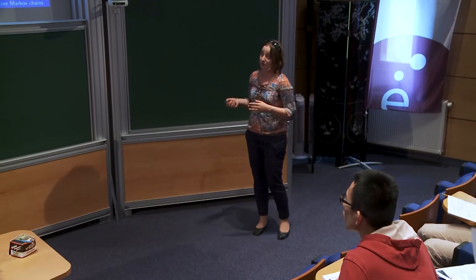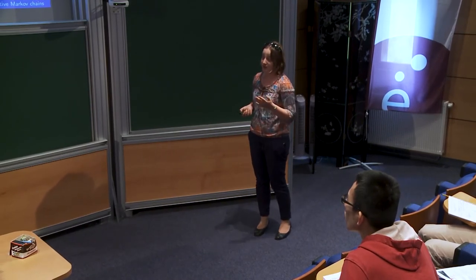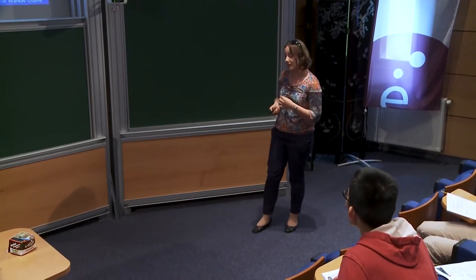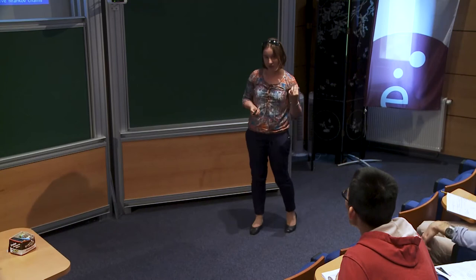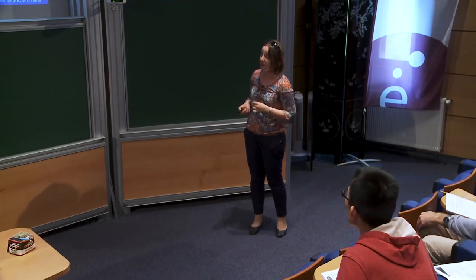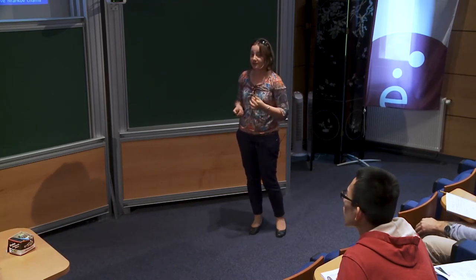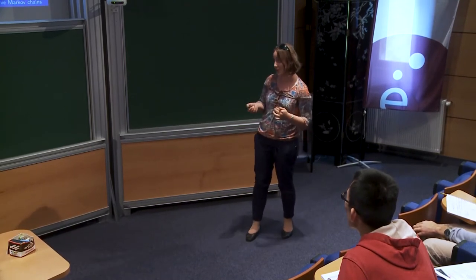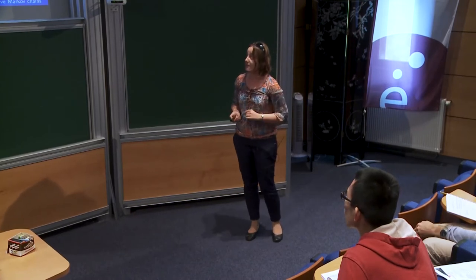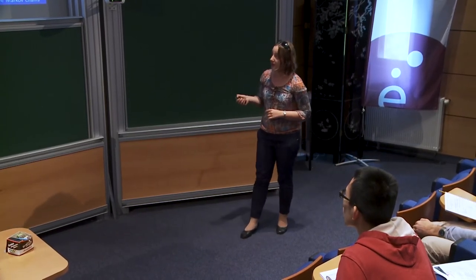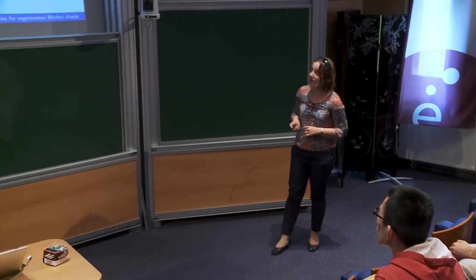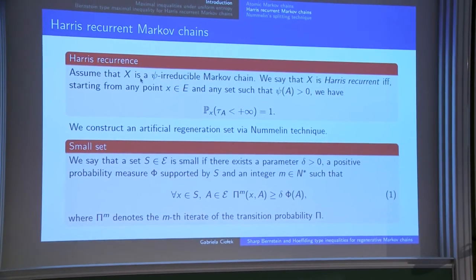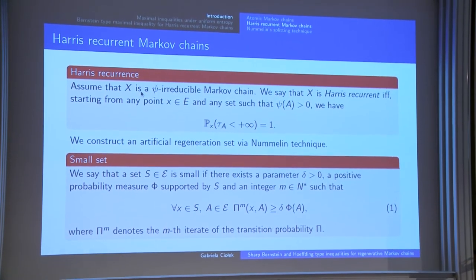Since we don't know if there is atomic structure in a Harris recurrent chain, we need to extend the probabilistic structure of the chain via the Nummelin splitting technique in order to construct an artificial atom and retrieve regeneration properties in the Harris recurrent case. Before formulating the technique, I introduce the notion of a small set, since the Nummelin splitting technique relies heavily on this entity.